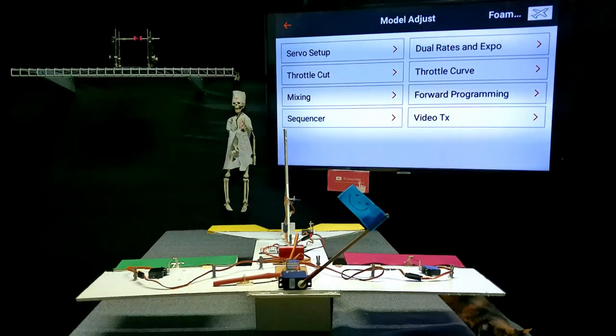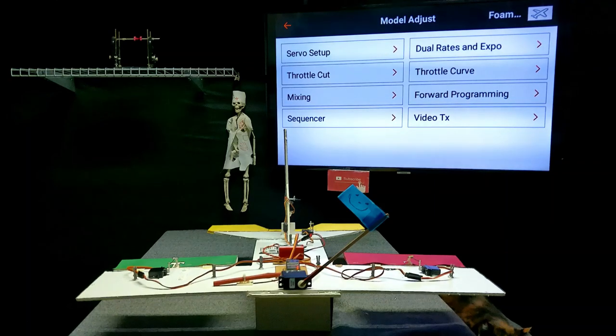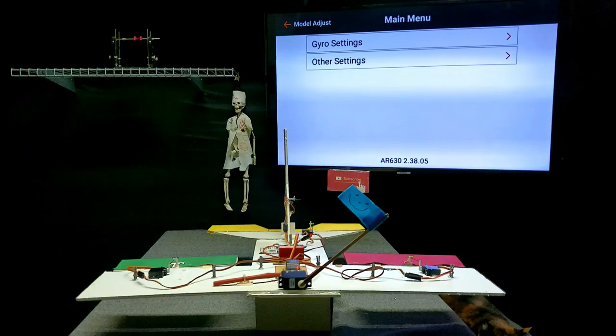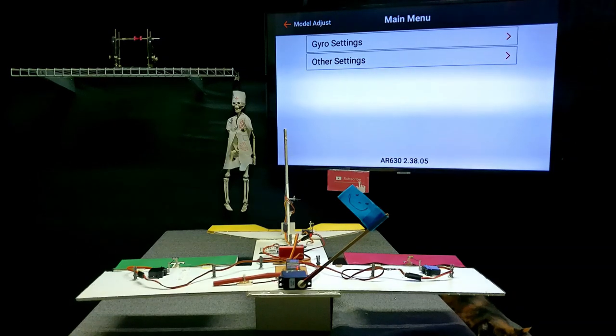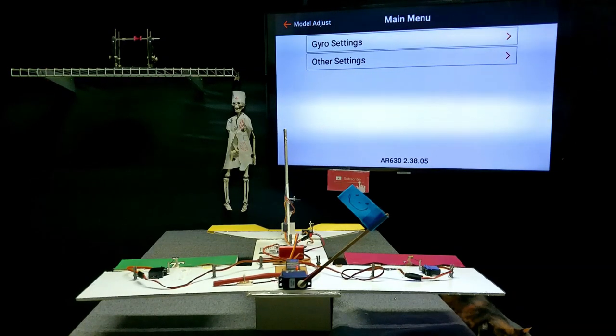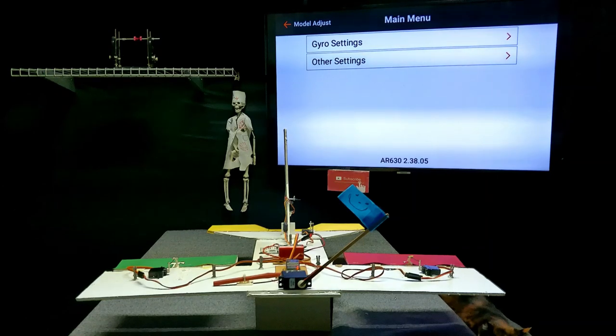And you must have a throttle cut set in order to go into forward programming. I already had one set. If I didn't, a screen would pop up saying that you need to establish a throttle cut before you can go any farther.